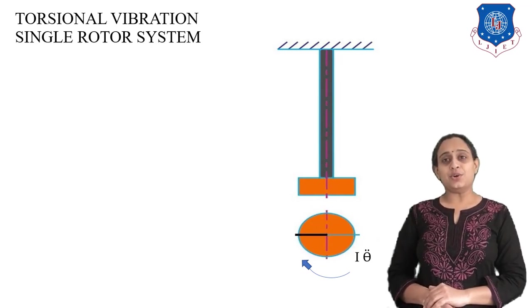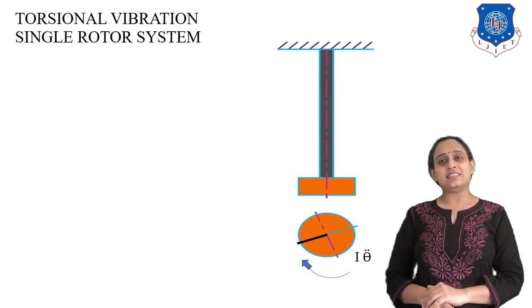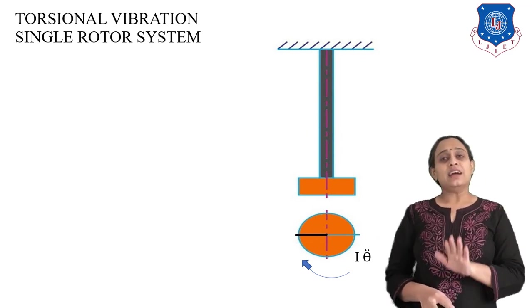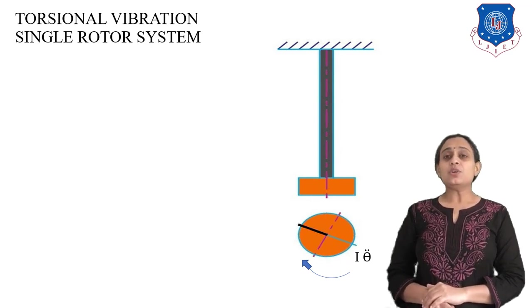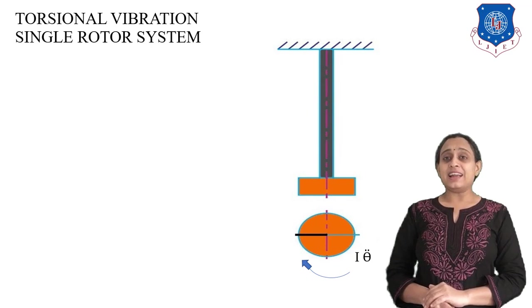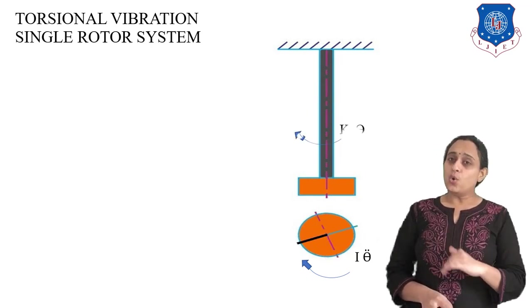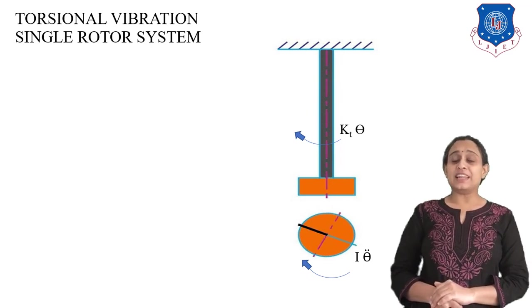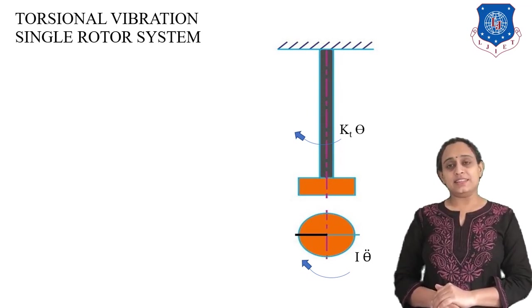If we tend to move the rotor in any direction, the reaction is in the opposite direction, and that opposite direction reaction is known as inertia torque. This inertia torque is represented as I·θ̈ — instead of I·α, we write I·θ̈. Similarly, the shaft will be twisted and will return in the opposite direction, so the restoring torque is KT·θ.